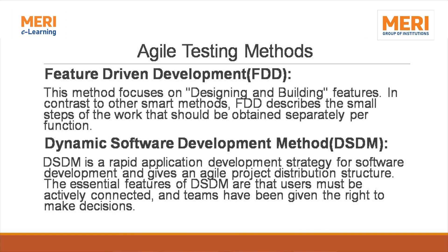FDD, Feature Driven Development, is another testing method of Agile. This method focuses on designing and building features. In contrast to other methods, FDD describes the small steps of work that should be obtained separately per function. Dynamic Software Development Method, DSDM, is the base method of Agile model. Here, strategies are made for software development involving software developers and designers, giving an Agile project distribution structure. The essential features of DSDM are that users must be actively connected and teams are given the right to make decisions.